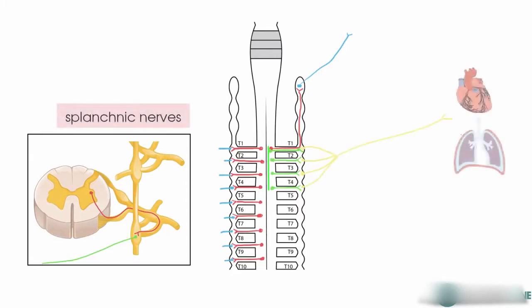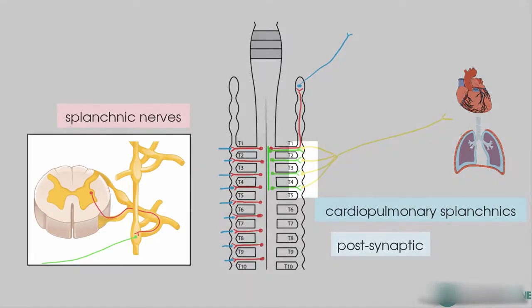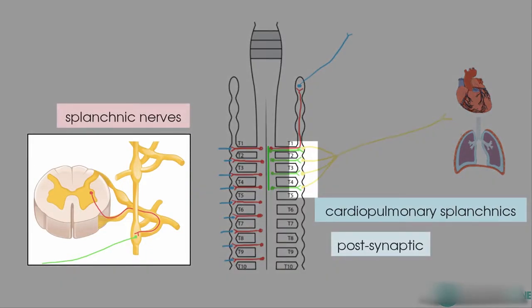These nerves supply the heart and the lungs, and are therefore known as cardiopulmonary splanchnic nerves. It is important to note that these splanchnic nerves are postsynaptic, so the fibres arise after synapsing in the sympathetic ganglia.